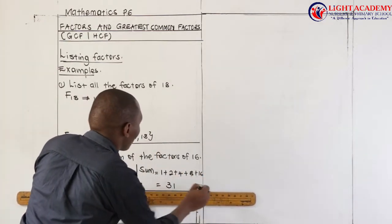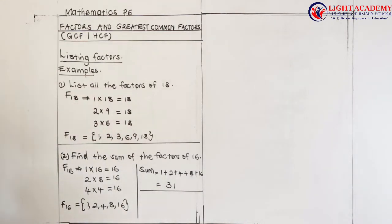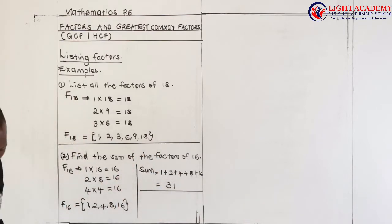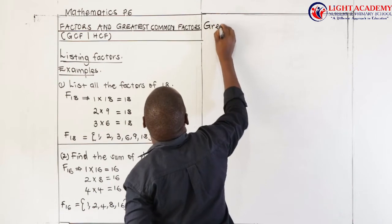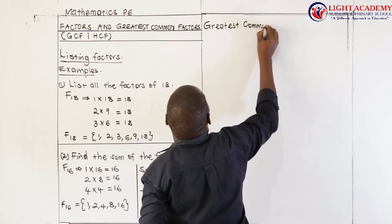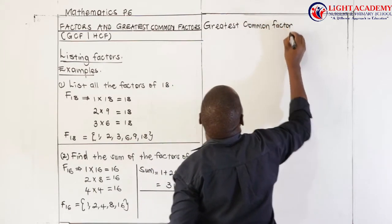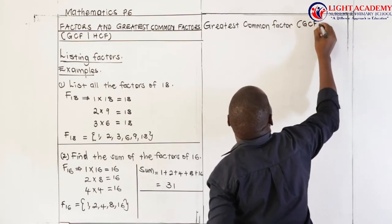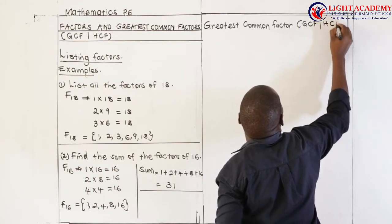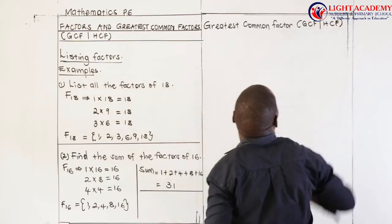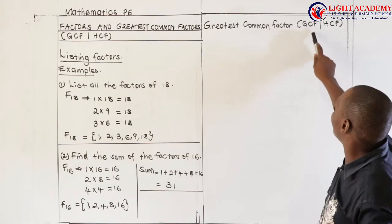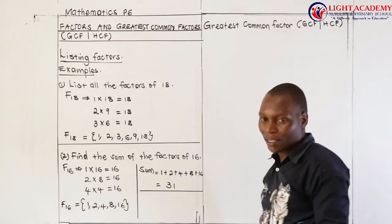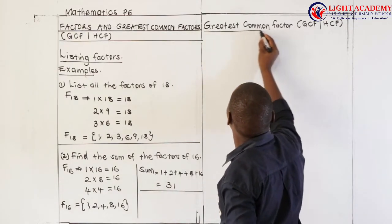So we can see how we can use the concept of listing factors to answer other questions. You will meet more related questions in your activity and try to use that idea. Now I want us to also revise something concerning the greatest common factor. The greatest common factor is always written in short as GCF. It can equally be written as HCF, which refers to the highest common factor. These two abbreviations mean the same thing.